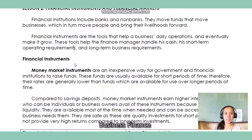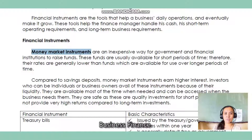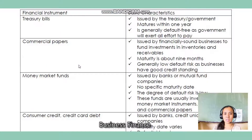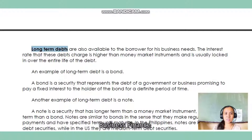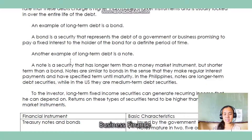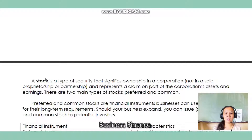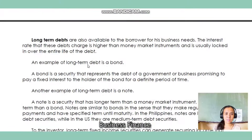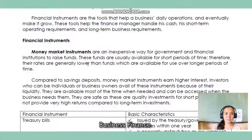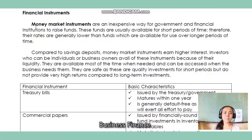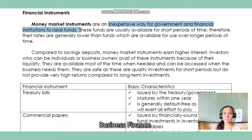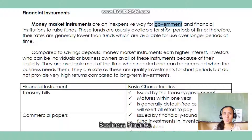In this lecture we're going to be talking about: first, the money market instruments; second, the long-term debts; and third, stocks. Let's start with the money market instruments. Money market instruments are an inexpensive way for government and financial institutions to raise funds, meaning they can be issued by the government or by financial institutions.